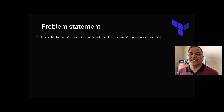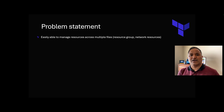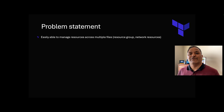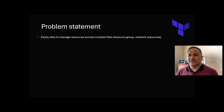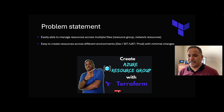The problem statement we have is we should be easily able to manage the resources across multiple files. In the last video, we looked at how to modularize the Terraform configurations file — we had different files for the provider configuration, then a different file for the resource group, and different files for the networking-related sections. In this video, we will see how we can use these different files and manage them more effectively, because if we had to change certain things, we might have to navigate through all these different files to make those changes.